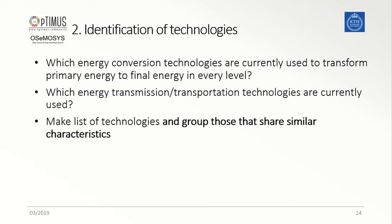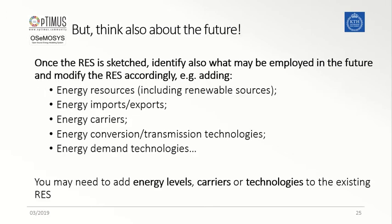After that, it is always important to try and group all the technologies based on similar characteristics and way of functioning. In the reference energy system, it will be enough to represent one technology per each group identified. It is also important to make sure that possible future technologies that could potentially be deployed in the system are included in the reference energy system, so that the model can investigate all possible future development pathways.